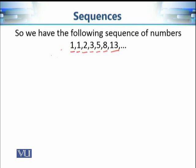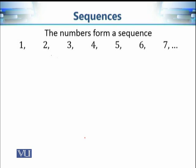This is the sequence one, one, two, three, five, eight, thirteen, and so on — known as the Fibonacci sequence. To find the next number, you add the previous two numbers. So the next number after thirteen is going to be twenty-one, then twenty-one plus thirteen, and so on.